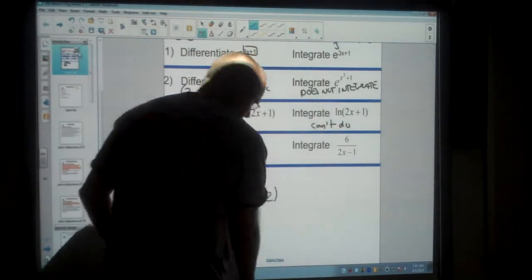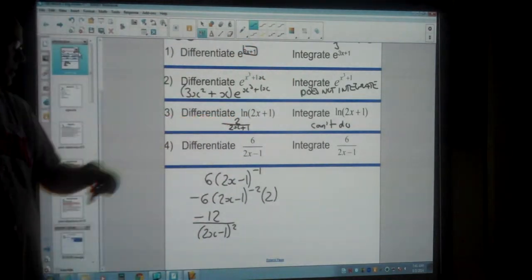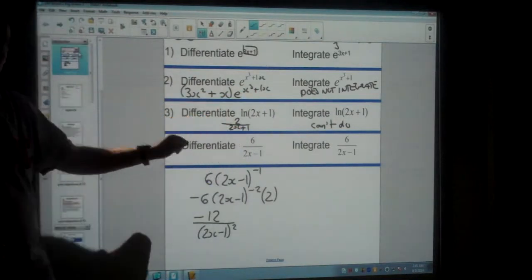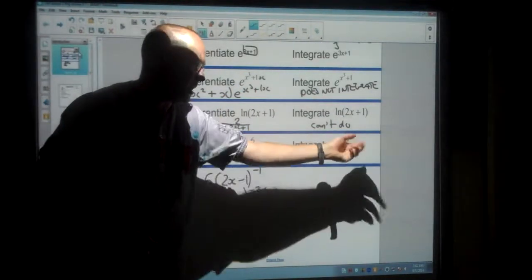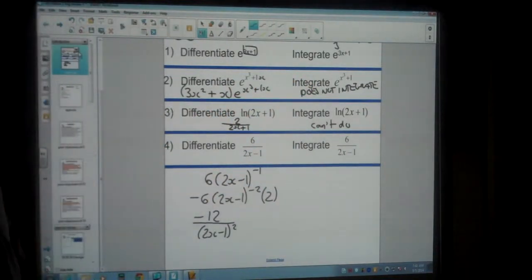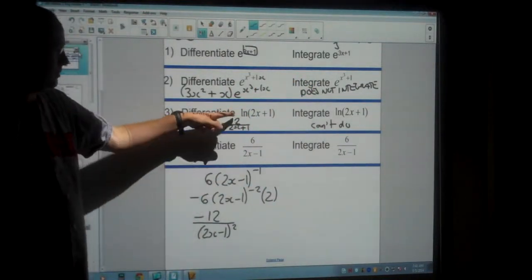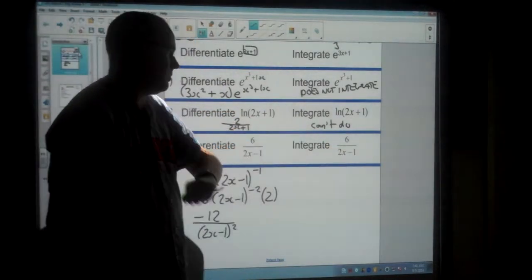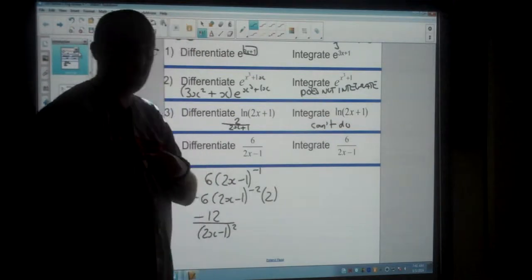Now what we're actually going to do is look back to this question up here. If we differentiate the ln function, we're going to end up with a fraction. So the fraction, we have a fraction here, when we integrate it, means we're going to go back to the ln function. Now the key part about the ln function is the top is the derivative of the bottom. Now at the moment that's not true for this question, because the derivative of 2x minus 1 is 2.